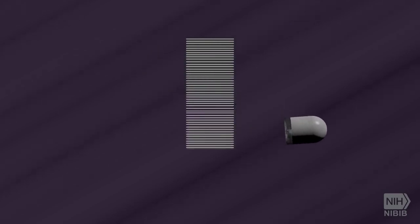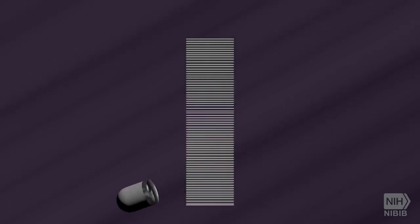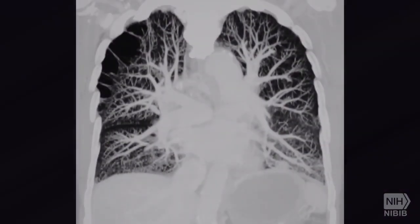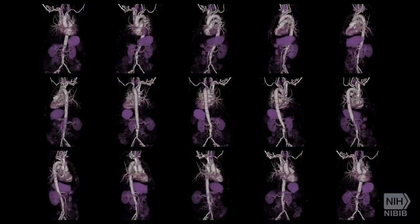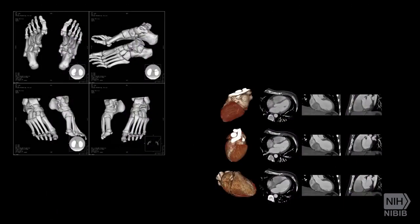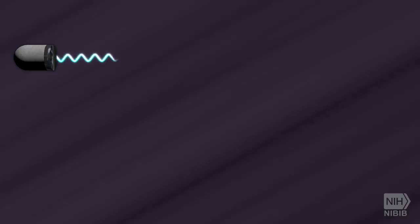A CT scan is an x-ray procedure that creates cross-sectional images with the help of computer processing. CT images are more detailed than conventional x-ray images and can reveal bones as well as soft tissue and organs.